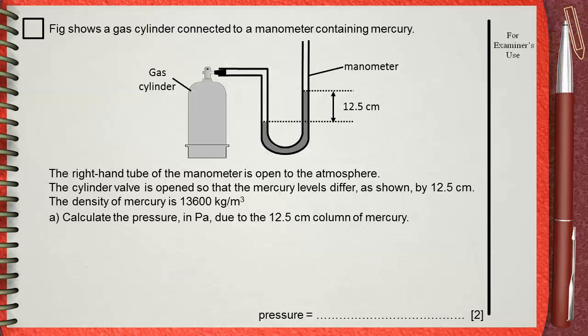Again, identify the givens of the question. You have 12.5 centimeters which is the height. You also have 13,600 kilograms per meter cube which is the density. And he is asking for the pressure.